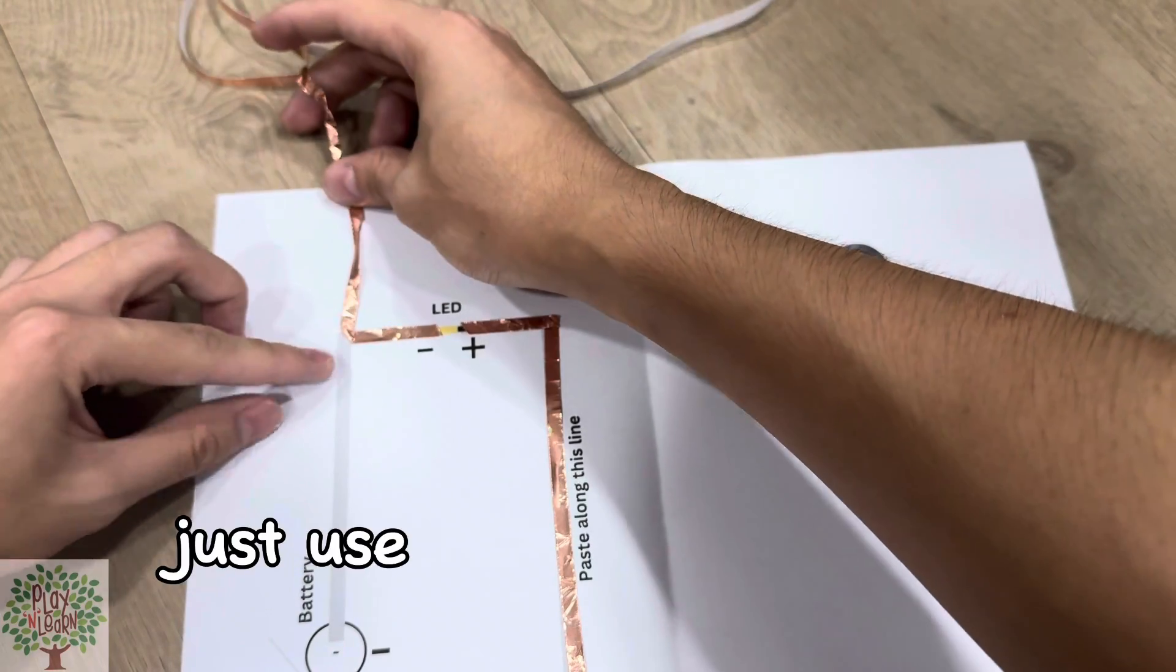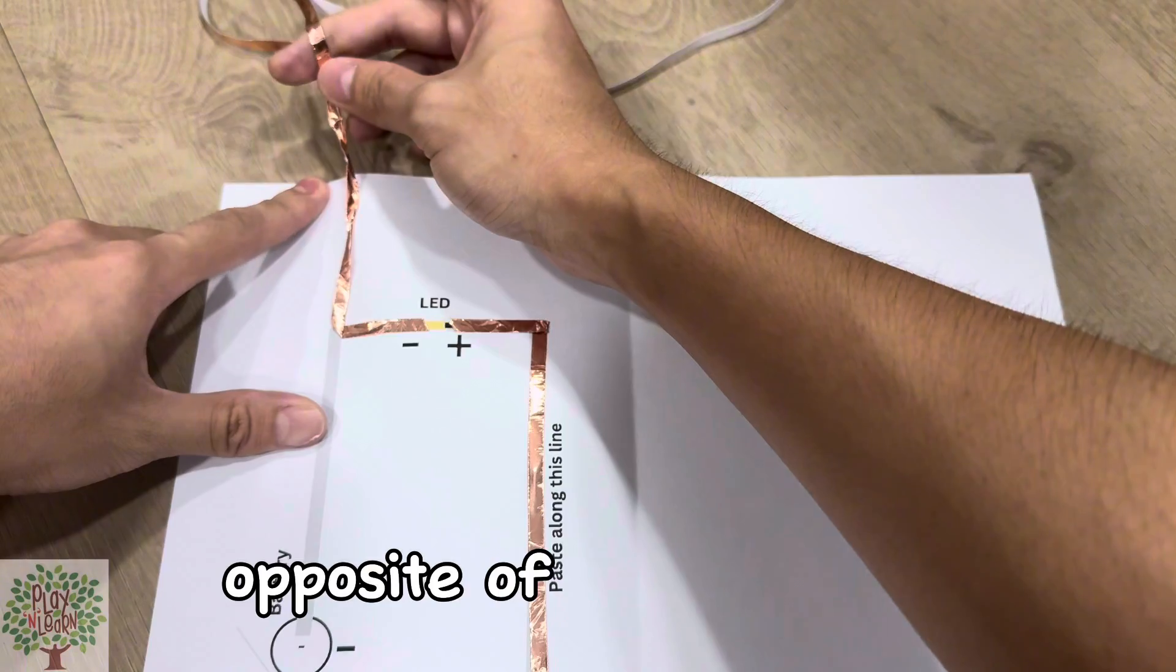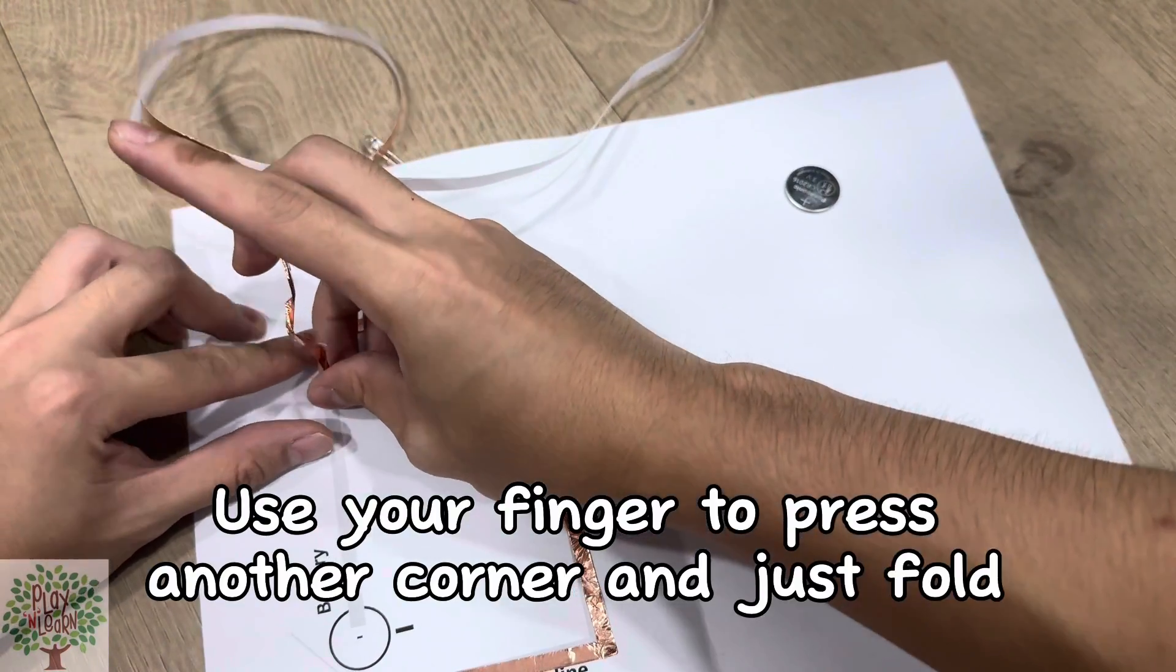So again for the corner, just use your finger to fold the copper tape diagonally into half opposite of the next line. Use your finger to press on the corner and just fold along the line.